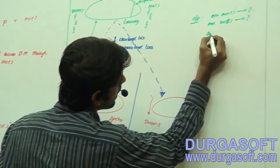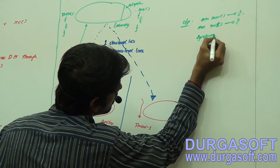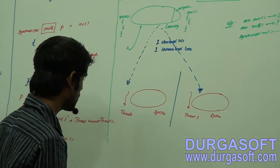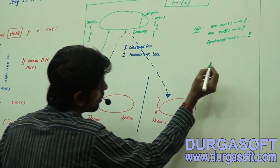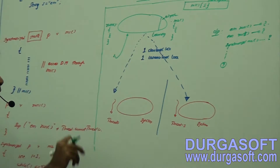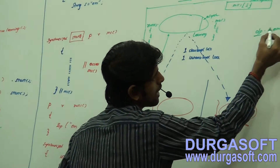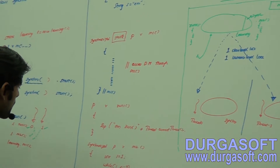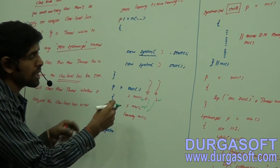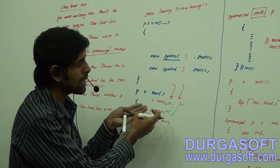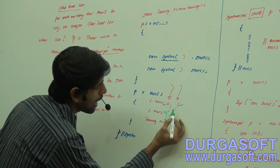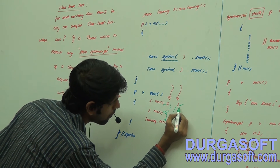Synchronized m2 will get printed for nine times — this is guaranteed. After executing this method, the thread releases the lock, and the other thread will come and execute it. Thread zero and thread one will acquire the object-level lock to execute m2. But thread zero, in order to execute m1, needs a different lock.